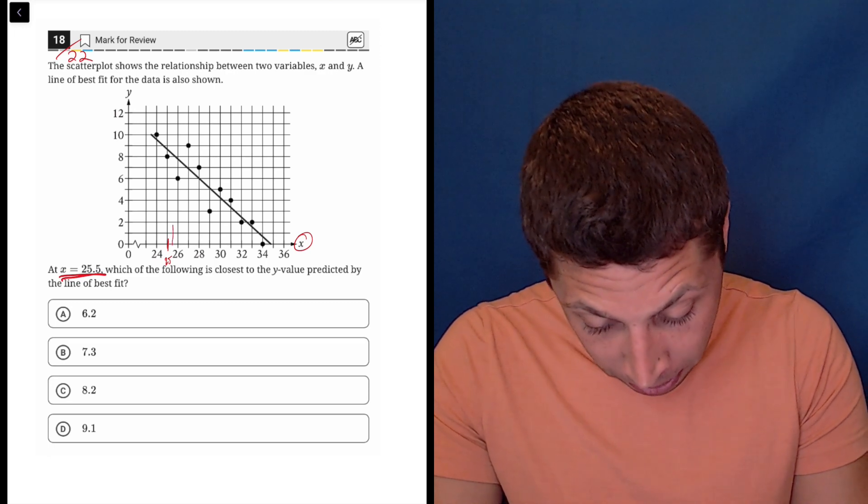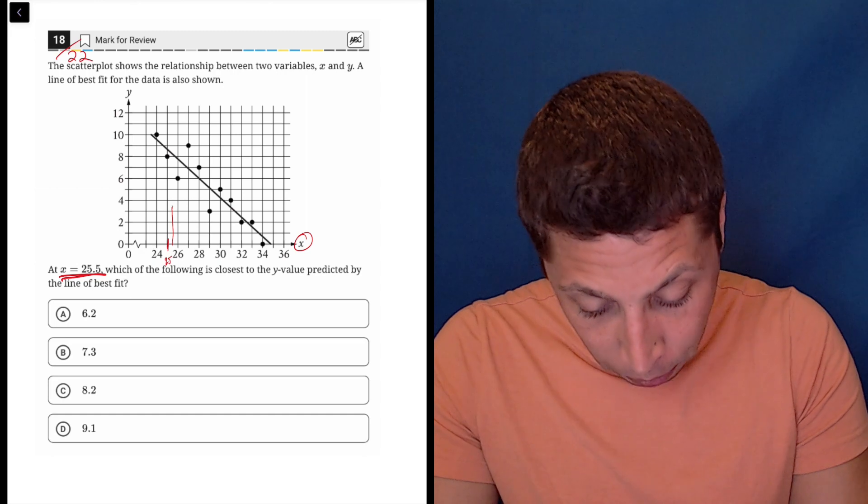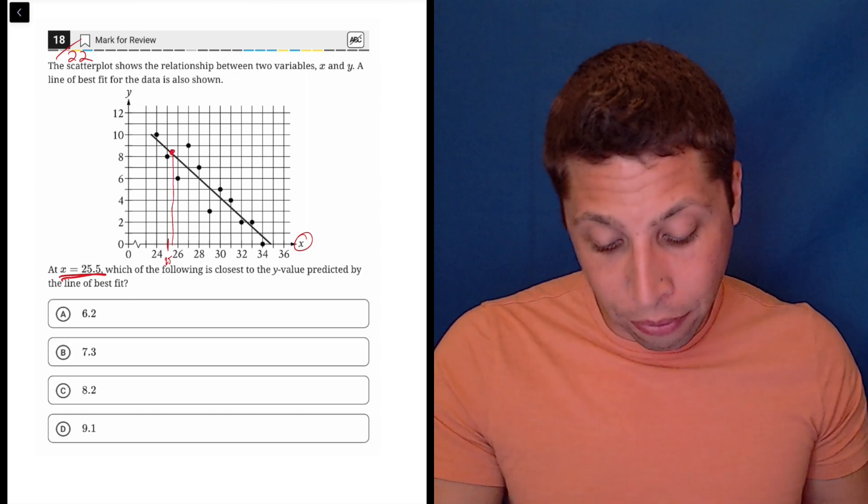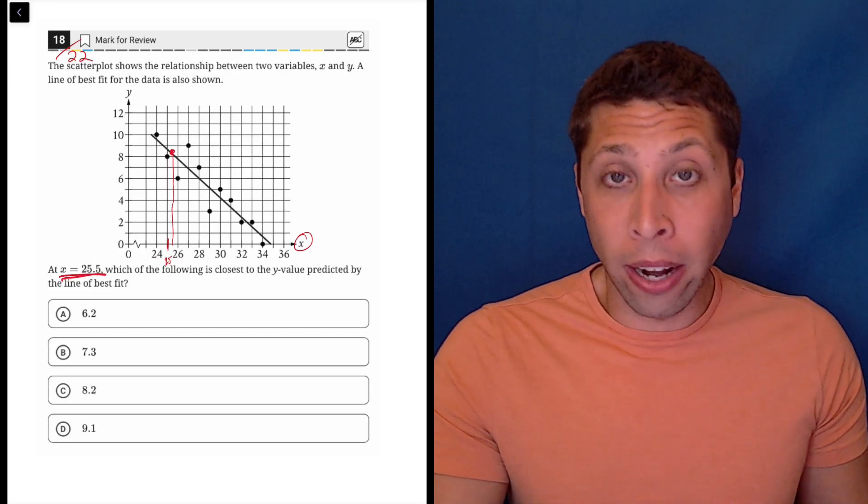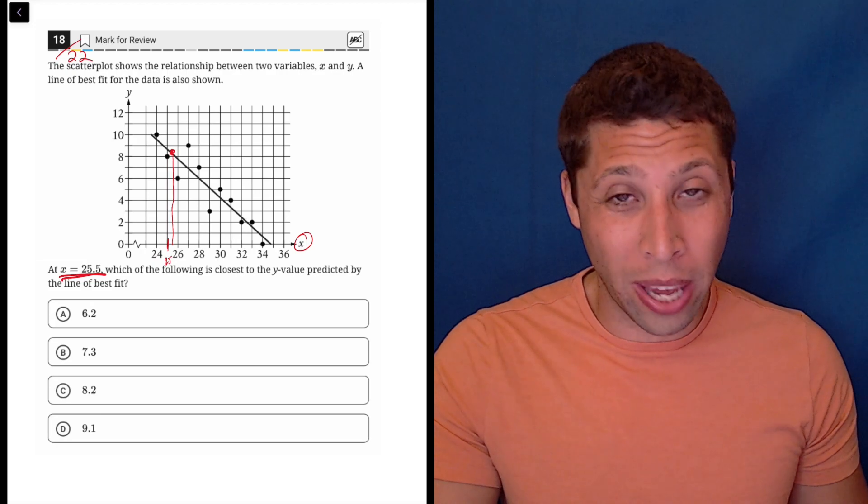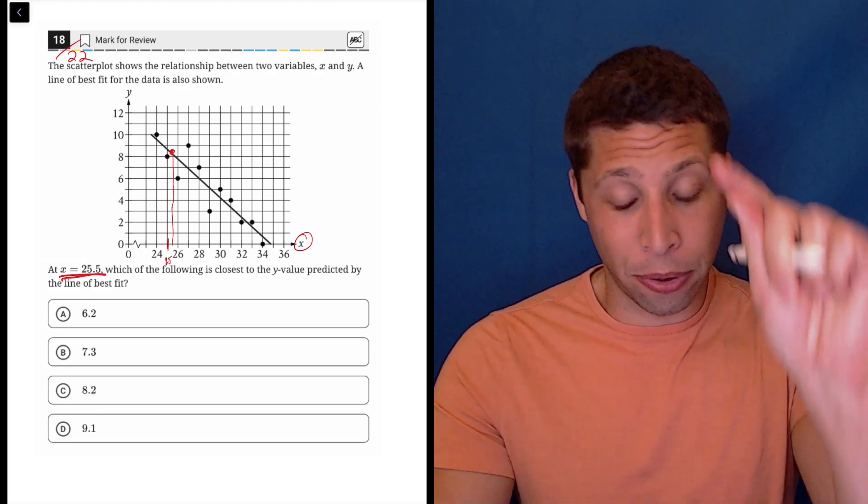So we go up, and I know one problem is I'm able to draw on my graph, but you wouldn't be. On the computer, you can draw on the graph, you can kind of highlight some things and cross out answer choices, but you can't really draw on it. So you got to kind of follow with your finger.